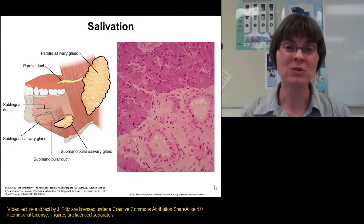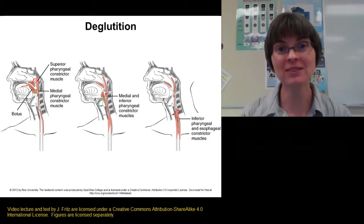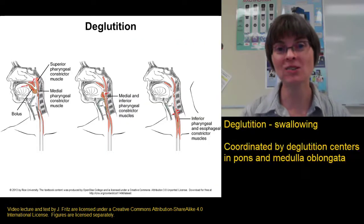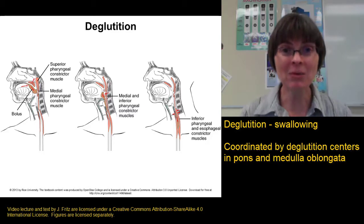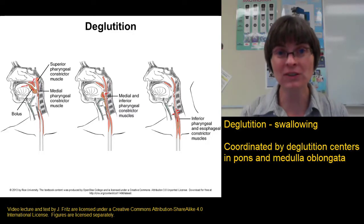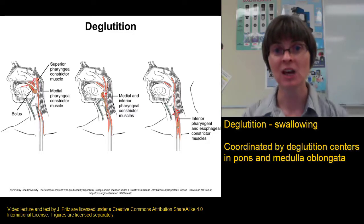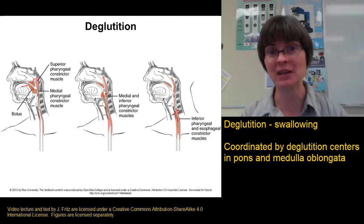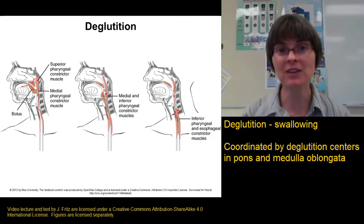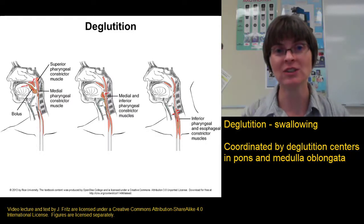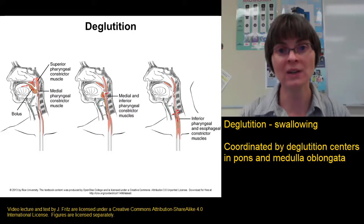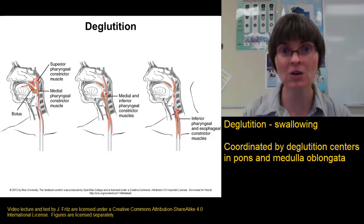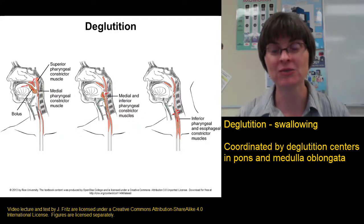Once food is chewed, we swallow it — the process of swallowing is called deglutition. Deglutition is complex, involving the coordination of over 20 different muscles, some voluntary and many involuntary. There are deglutition centers in the pons and medulla oblongata of the brain that coordinate those muscles so we can swallow without choking.